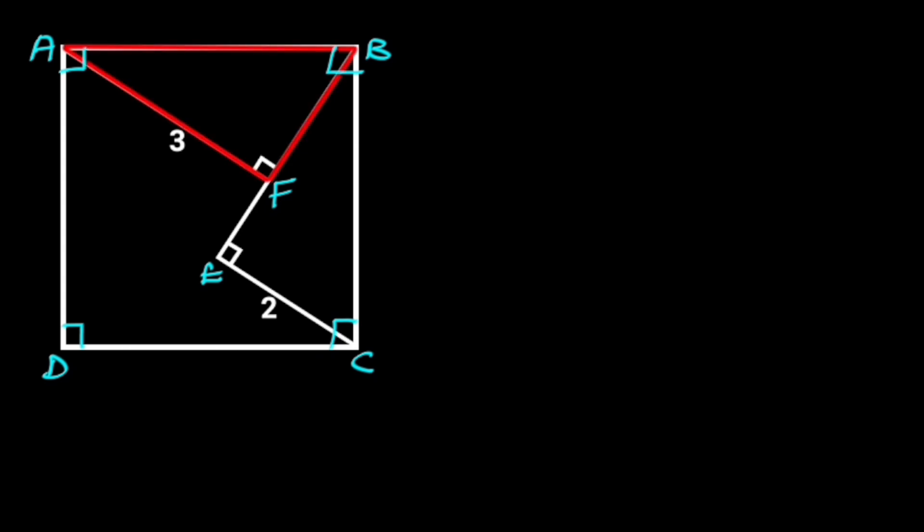Also, line AF and line EC are perpendicular to line EB. Next, let's consider triangle ABF and triangle BCE. In these triangles, angle AFB is 90 degrees, likewise angle BEC. This shows that both triangles are right triangles.